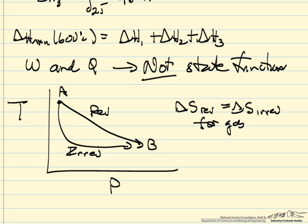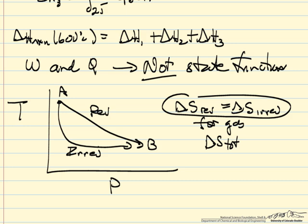Remember, this is for the gas. We're not talking about delta S total of the system plus surroundings. We're just saying for the gas that we're looking at, we're going from A to B by two pathways, I'm going to have the same delta S for the gas, independent of whether one is reversible and one is irreversible.